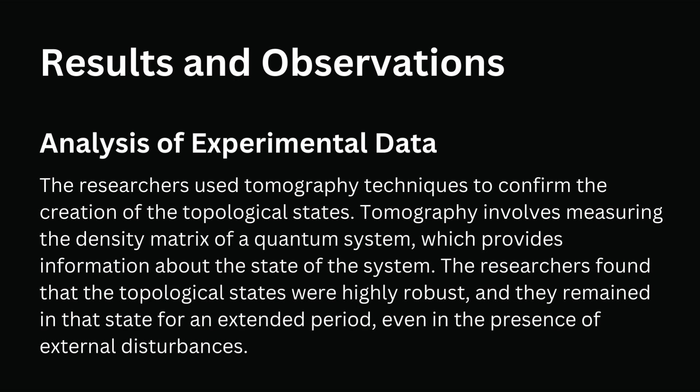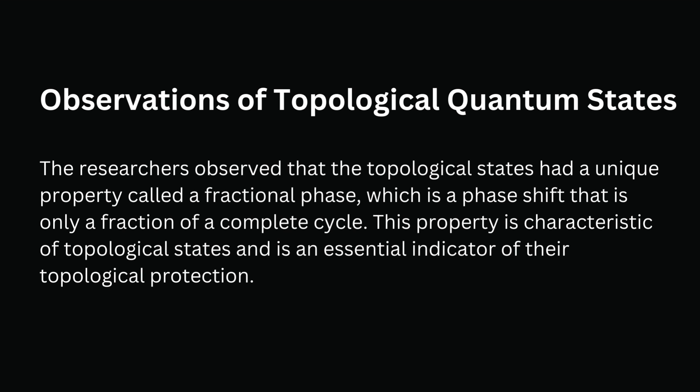Results and Observations. The researchers used tomography techniques to confirm the creation of the topological states. Tomography involves measuring the density matrix of a quantum system, which provides information about the state of the system. The researchers found that the topological states were highly robust, and they remained in that state for an extended period, even in the presence of external disturbances. The researchers observed that the topological states had a unique property called a fractional phase, which is a phase shift that is only a fraction of a complete cycle. This property is characteristic of topological states and is an essential indicator of their topological protection.